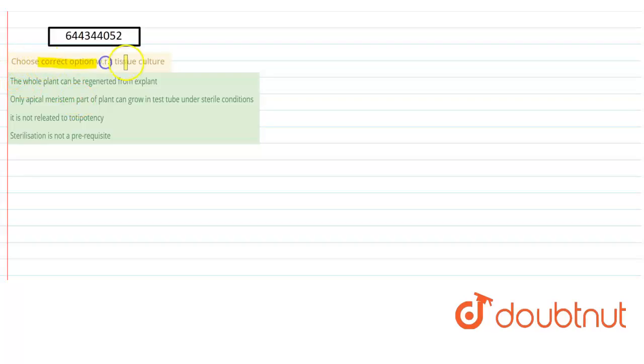Choose correct option with respect to tissue culture. The options are: the whole plant can be regenerated from explant; second, only apical meristem part of plant can grow in test tube under sterile conditions; third, it is not related to totipotency; and fourth, sterilization is not a prerequisite.